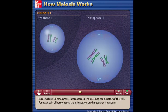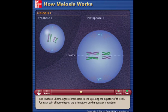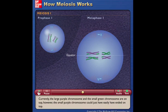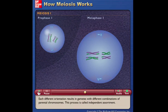In metaphase I, homologous chromosomes line up along the equator of the cell. For each pair of homologues, the orientation on the equator is random. Currently, the large purple chromosome and the small green chromosome are on top. However, the small purple chromosome could just as easily have ended on top. Each different orientation results in gametes with different combinations of parental chromosomes. This process is called independent assortment.